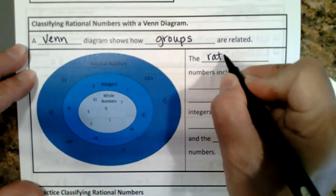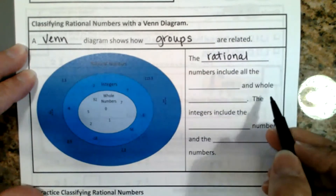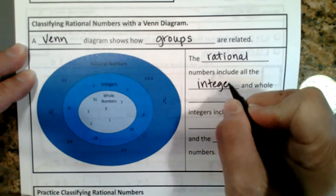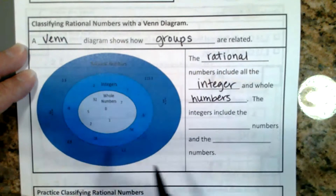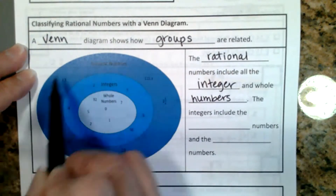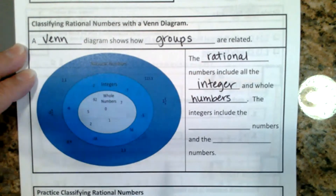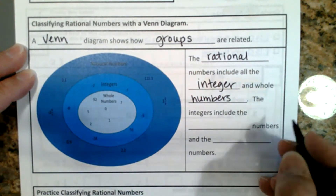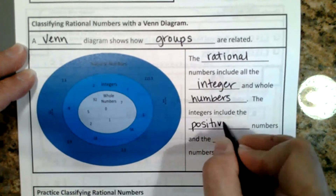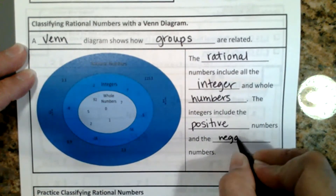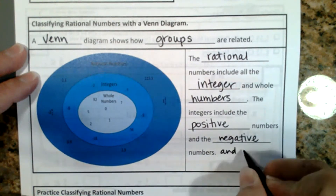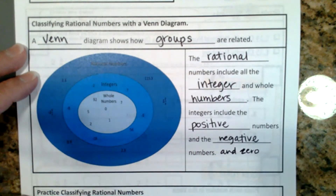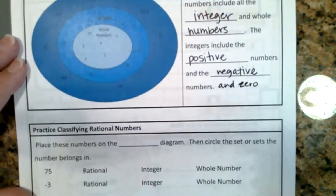Rational numbers include all of the integers and all of the whole numbers — fractions, decimals, integers, and whole numbers are all included. Integers include positive numbers, negative numbers, and zero. Now let's figure out how to classify numbers and practice that.